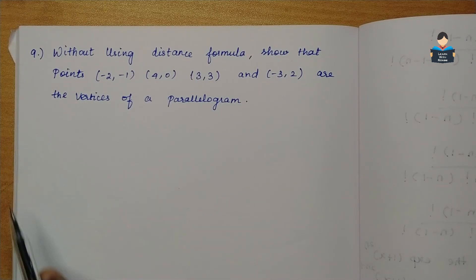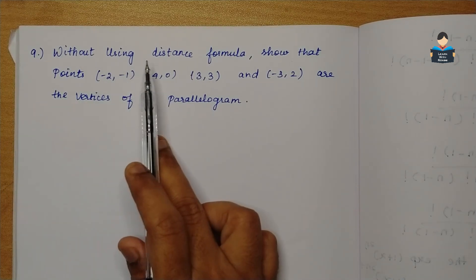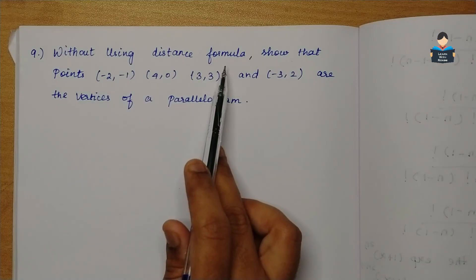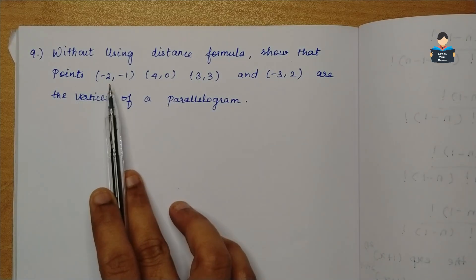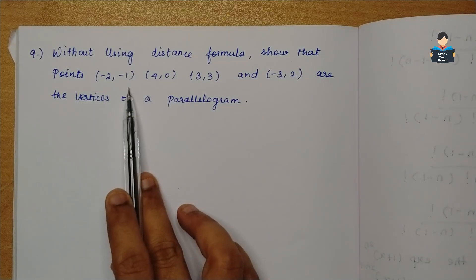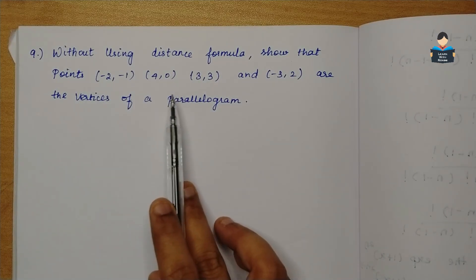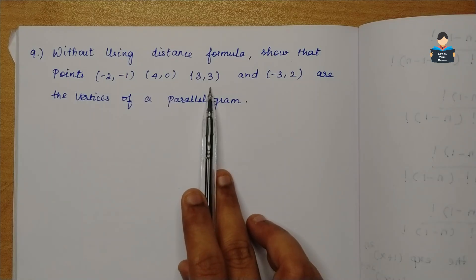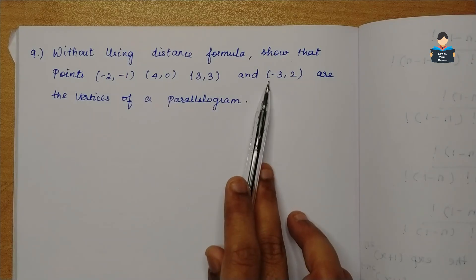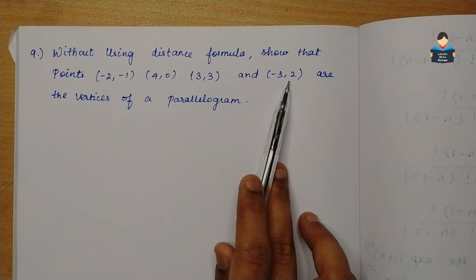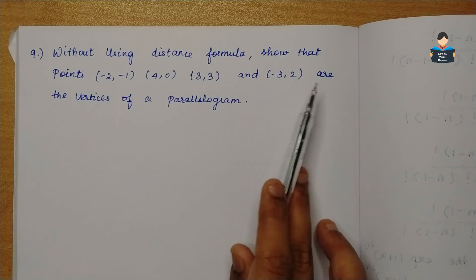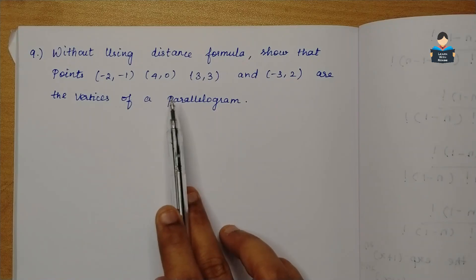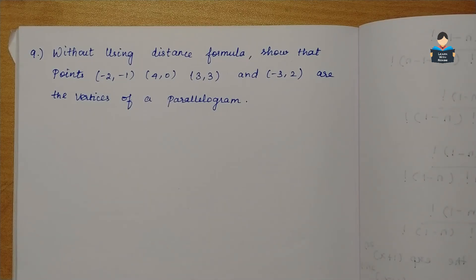9th sum of the parallelogram, without using distance formula, show that points minus 2, minus 1; 4, 0; 3, 3; and minus 3, 2 are the vertices of a parallelogram.